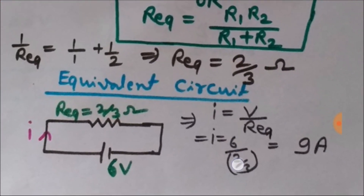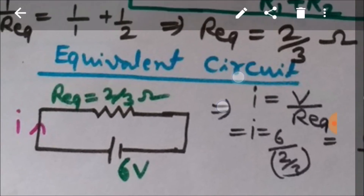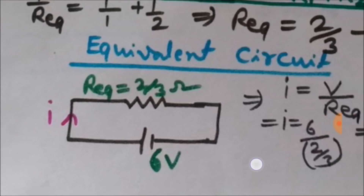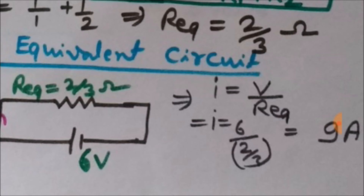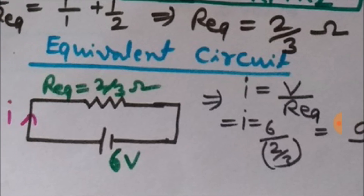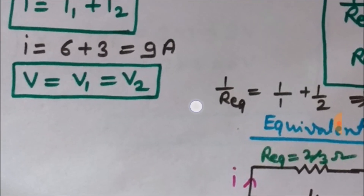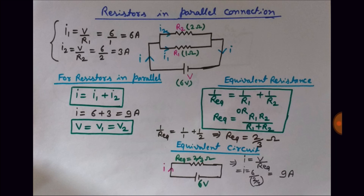In the equivalent circuit, the two parallel resistors are replaced by R_eq = 2/3 ohm with a six-volt battery. Applying Ohm's law: I = V/R_eq = 6 ÷ (2/3) = nine amperes, which matches our earlier calculation. In the next video we will see a few more circuits. You can subscribe to the channel Engineering Made Easy. Thank you for watching — see you soon!